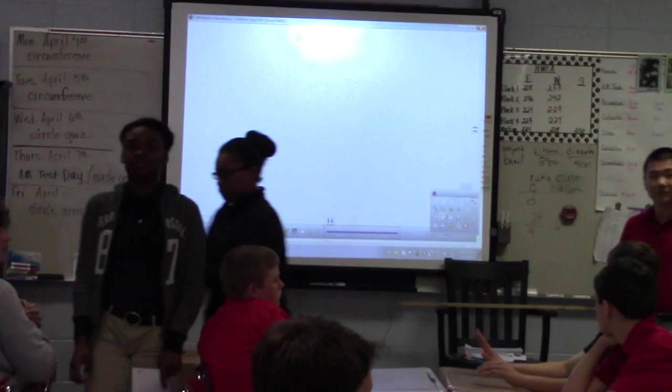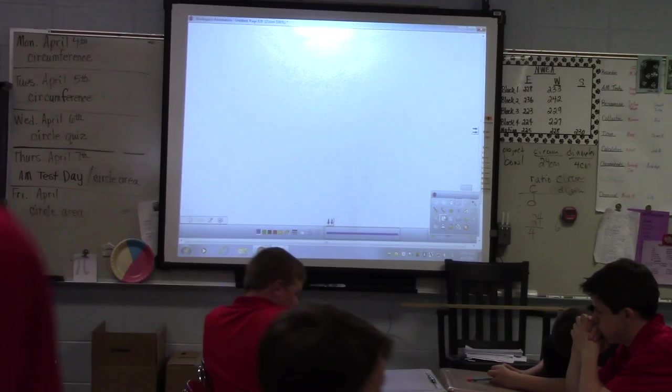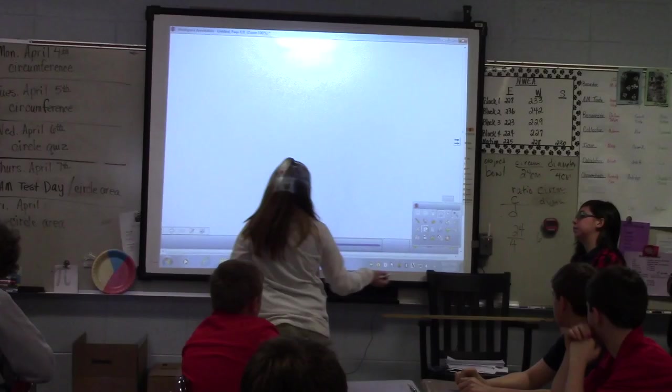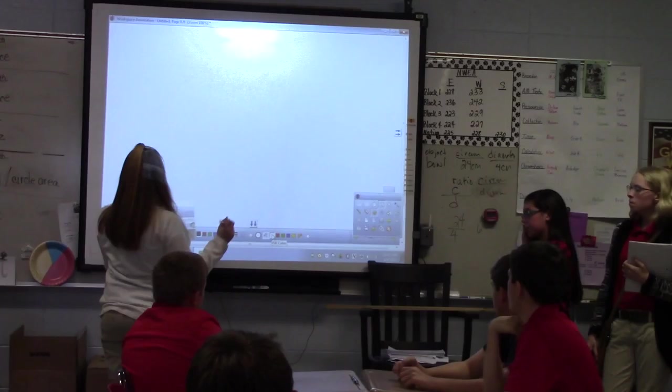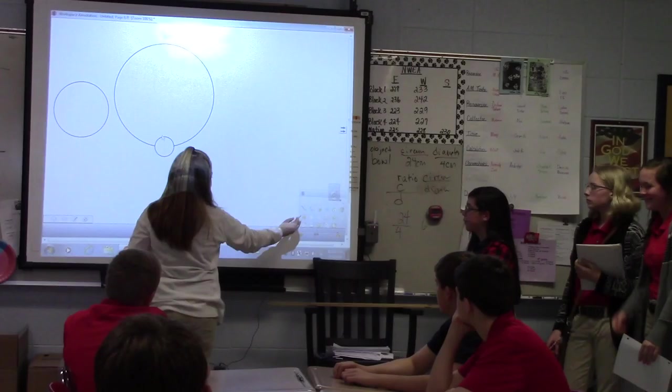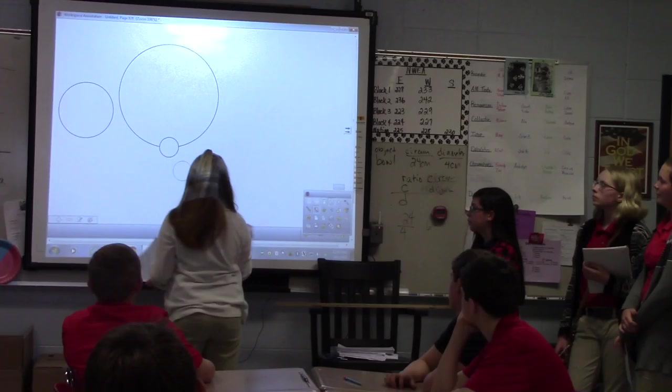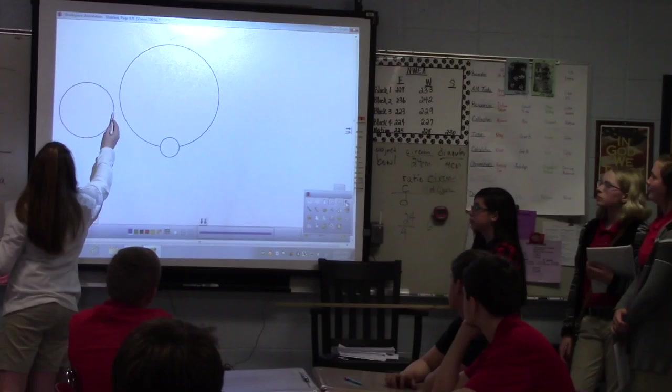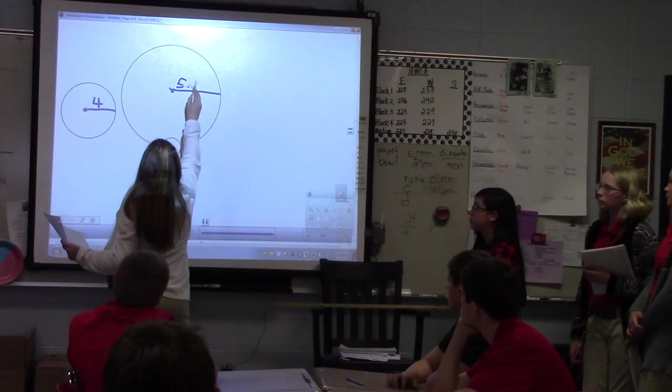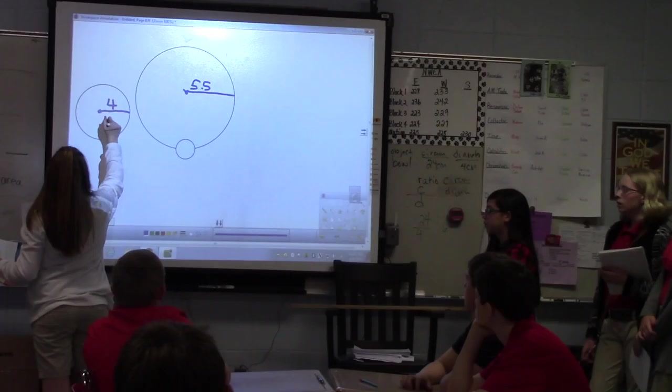When we did ours, there was a small pizza and a medium pizza. We left one of a large pizza. Okay. So the radius was 4 inches and the medium pizza was 5.5 or five and a half. And to get the diameter, it's the radius times 2, so 8 and 11.